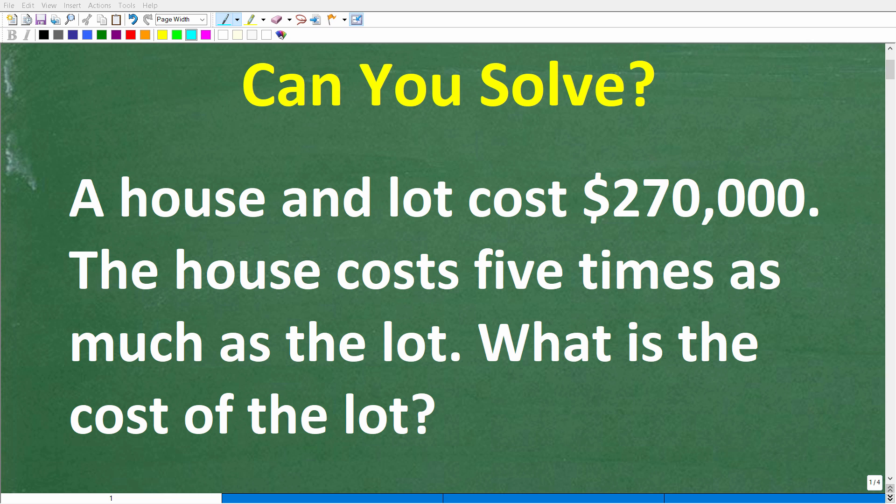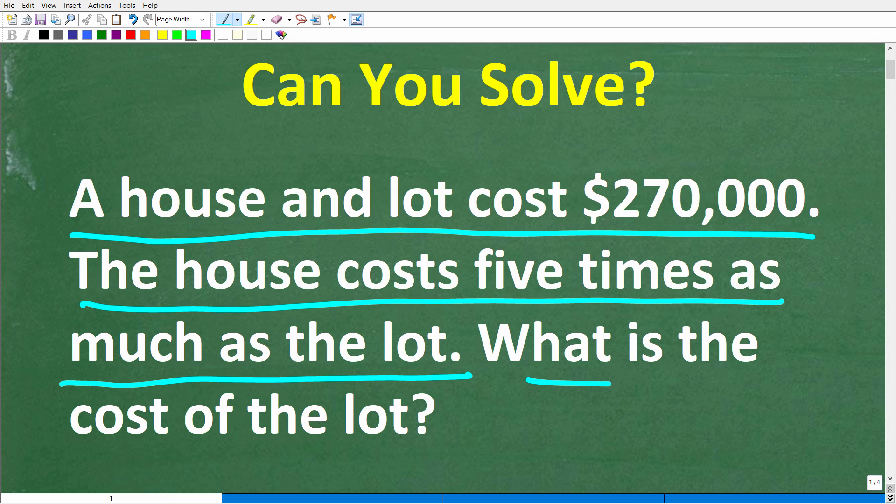Okay, so let's see if you can find the answer to this simple math word problem. Matter of fact, let me go ahead and read the problem. A house and lot cost $270,000. The house costs five times as much as the lot. What is the cost of the lot?